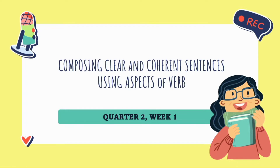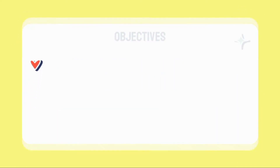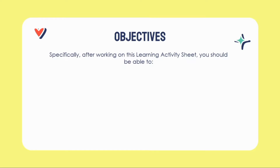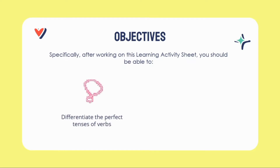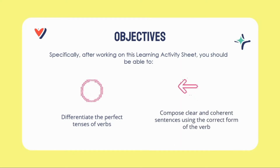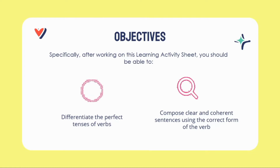Specifically, after working on this learning activity sheet, you should be able to: First, differentiate the perfect tenses of verbs. And second, compose clear and coherent sentences using the correct form of the verb.